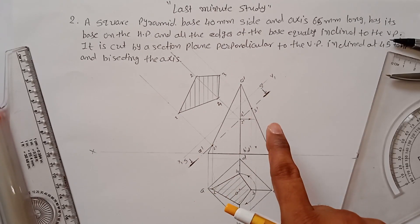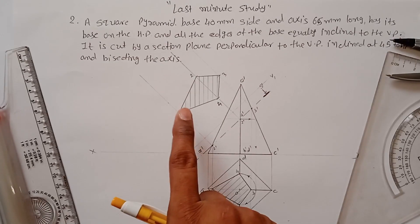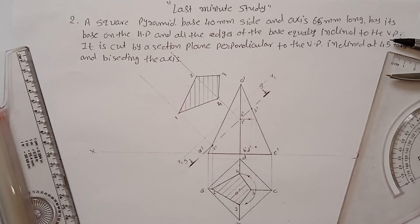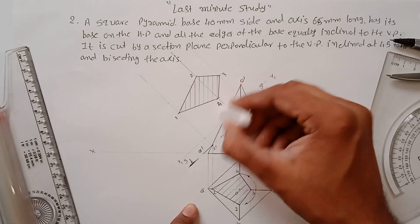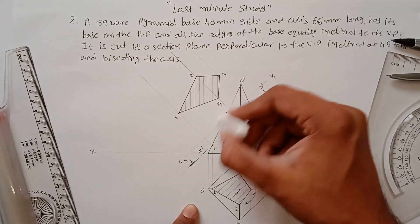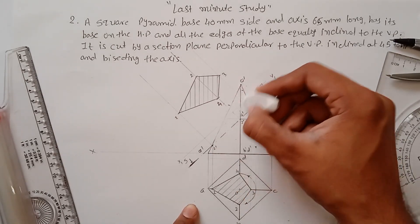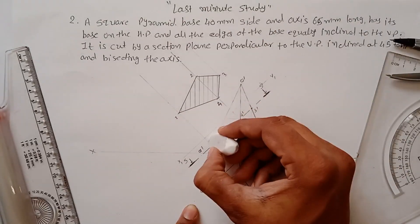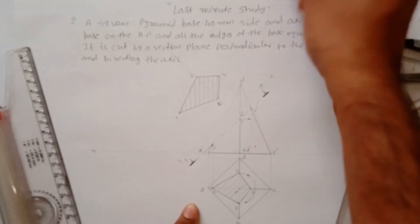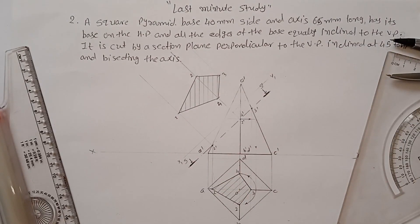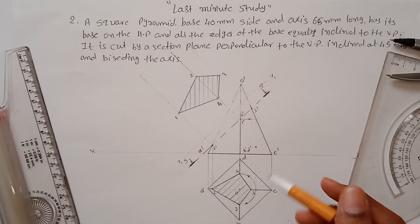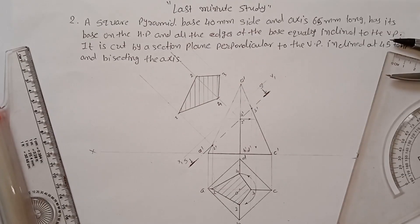In actual practice, the material that is removed should be made light — erase or lighten that portion so only the remaining solid is visible in the top view. This is how the front view appears after the cut. This completes problem number 2 from the section of solid.